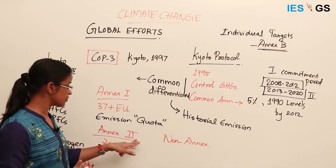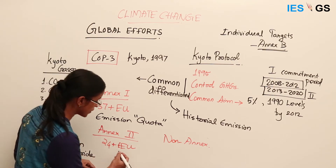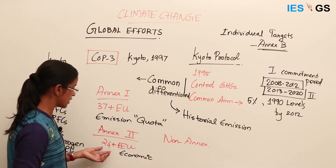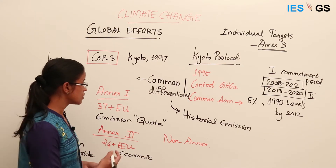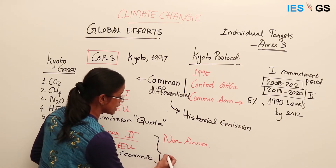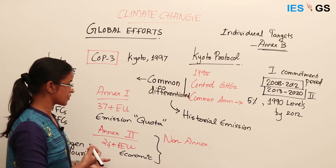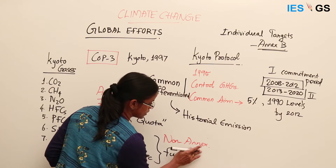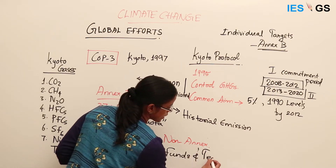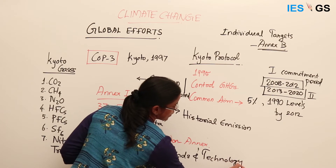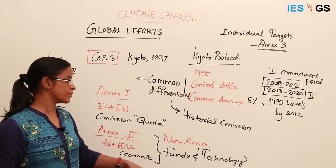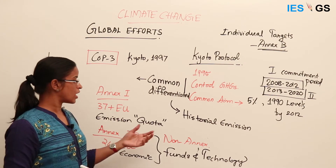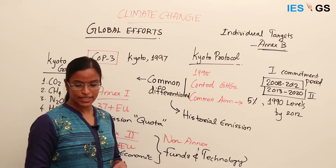Annex 2 includes 24 countries and the European Economic Union. These countries are supposed to support other countries in adaptation and mitigation measures — they are supposed to provide funds, technologies, and transfer technology to developing and underdeveloped countries to help them adapt to climate change and mitigate emissions. Other countries are included in the non-annex category.